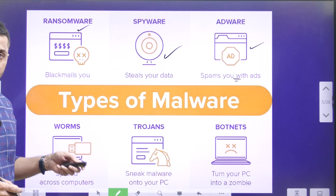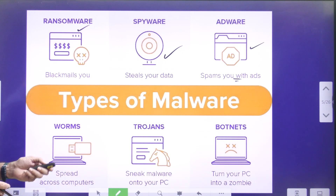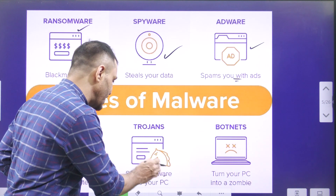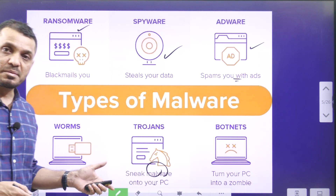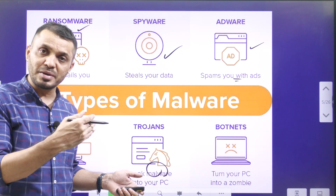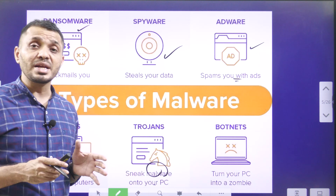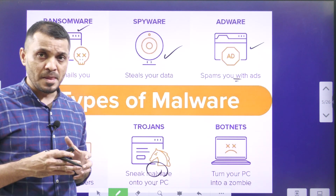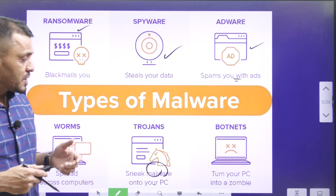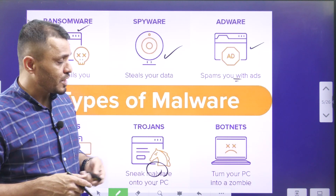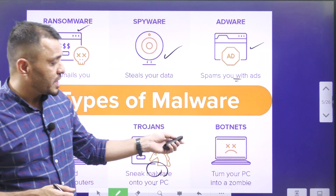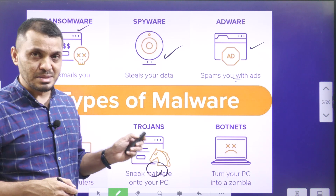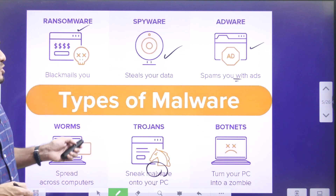Worms spread from one computer to another digital device. Trojans sneak malware into your PC — it may be due to your clicking or even without your involvement. If any malware is downloaded into your device without your involvement, that is known as zero-click malware. Botnets turn your PC to behave in an abnormal way. These are the different types of malwares.